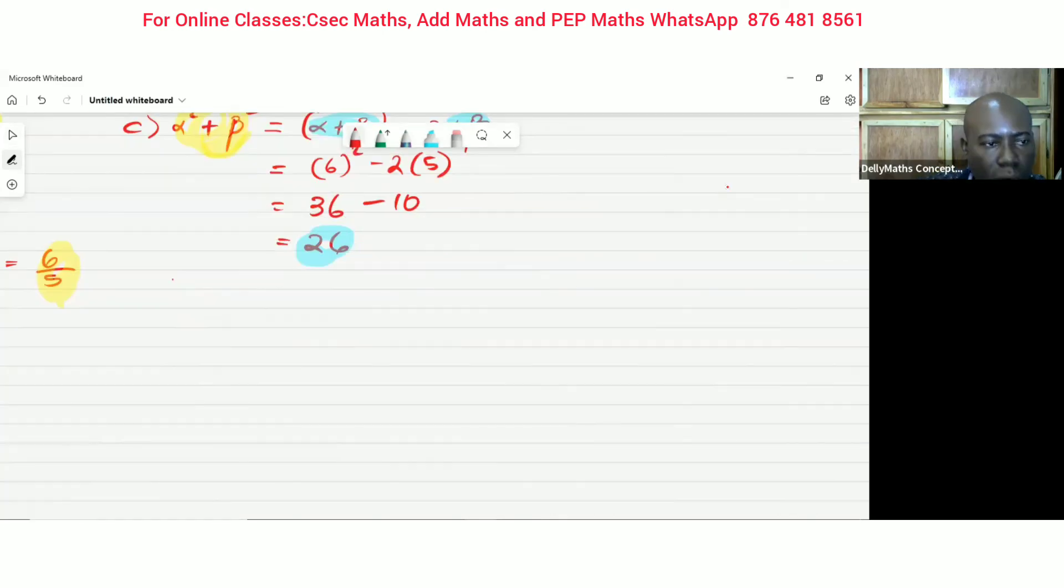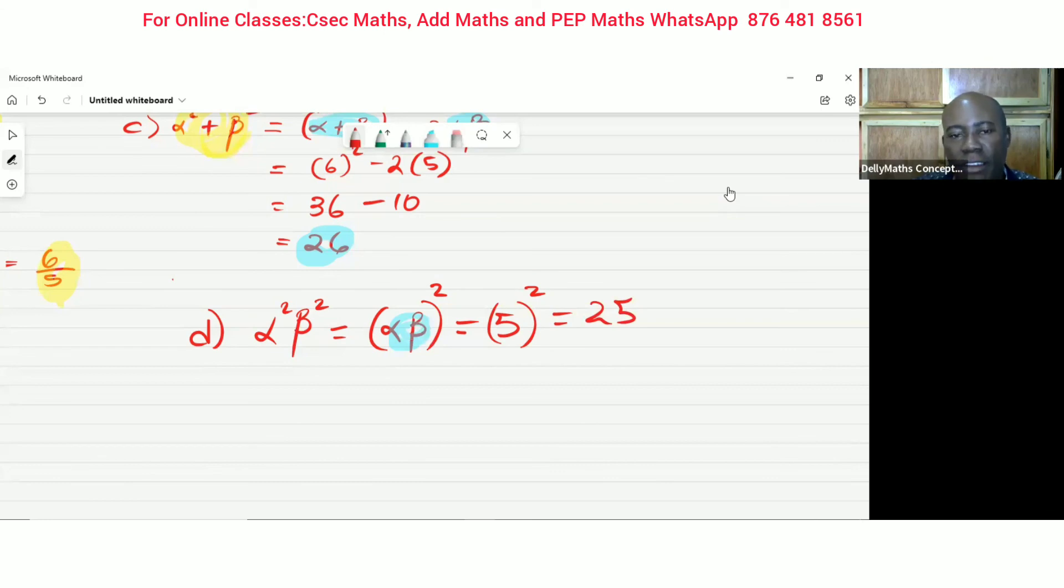So for this last one here, D, I'm supposed to do alpha square beta square. I'm not able to do anything with this right now. And the reason is, it's not in a sum or product format. But if you look at this and you understand the indices well, this is represented as alpha beta all square. So the laws of indices right now. So here it is, I now have it in a product form. And then what is the product? The product is simply five. Therefore, I will substitute the five for the product square, and my answer is 25. So it is very straightforward, very simple. And that's just an example of how you could evaluate your alpha and your beta. Thank you.